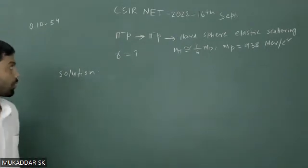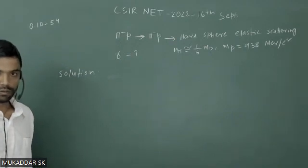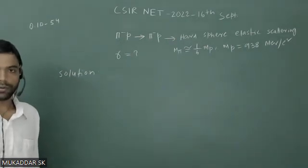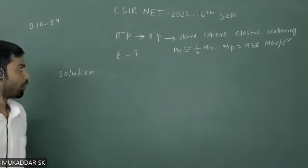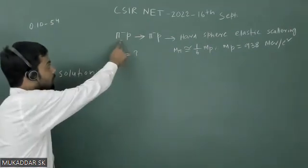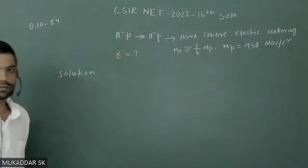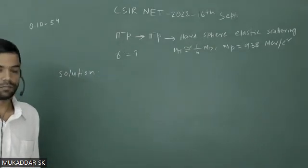You know, π⁻ and p, both are subatomic particles. So to calculate that total scattering cross section, we have to use quantum rule. Also, these particles are high energetic particles. So you have to calculate this total scattering cross section at high energy regime.